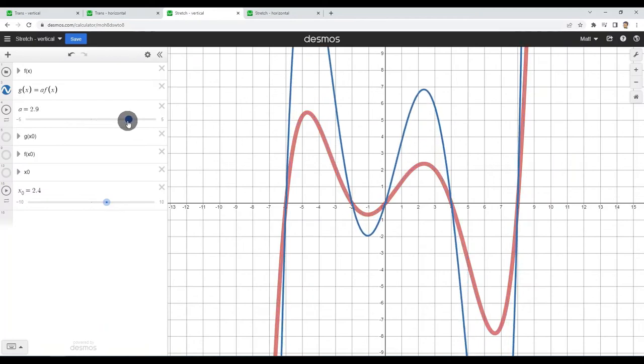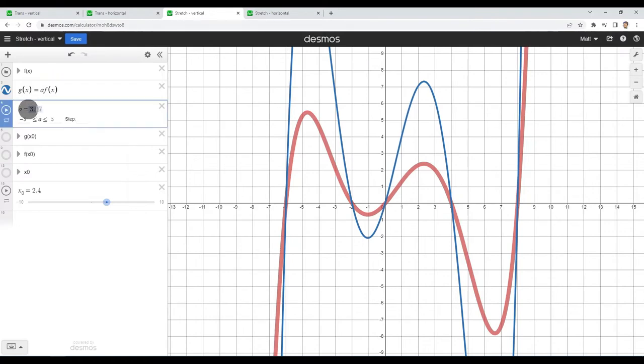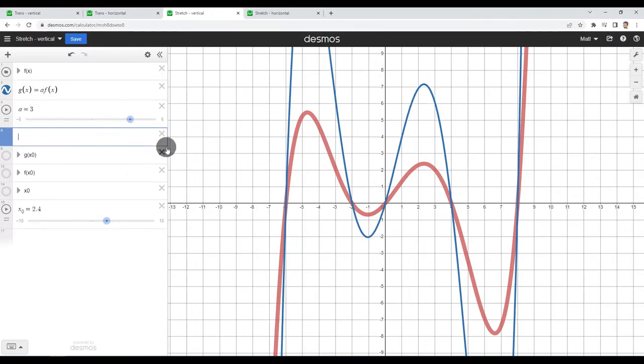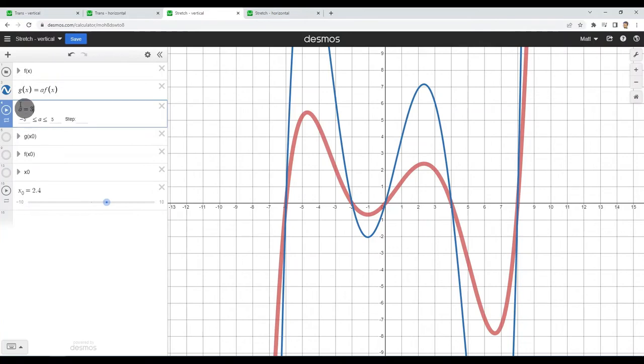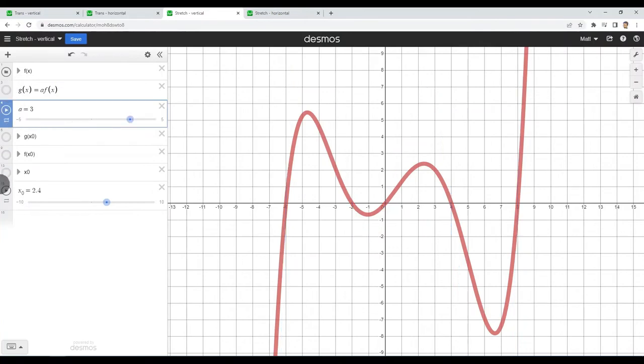Let's stretch our graph by three and follow a specific point. I'm going to look at x naught at around 2.4 because that roughly matches up with this peak. I am going to apply my function and then I am going to multiply that value by three.